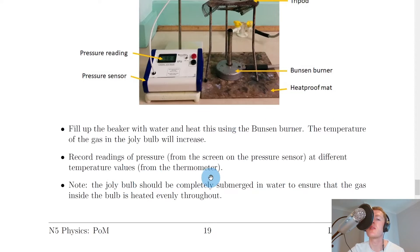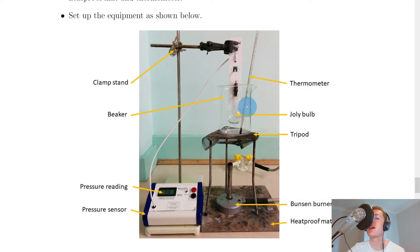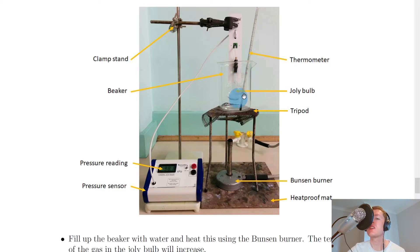What you would then do is record readings of pressure from the screen on the pressure sensor at different temperature values from the thermometer. So let's say for every five degree increase in the temperature on the thermometer you wrote down the pressure from the screen. Or in simpler terms you're changing the temperature of the gas inside the jolly bulb by changing the temperature of the water surrounding it and then you're measuring and recording the pressure reading from the pressure sensor.